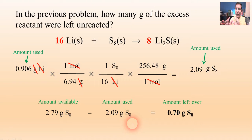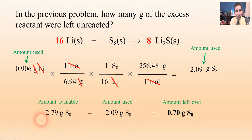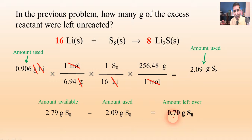This is like saying if we have a bag of 10 apples and you eat seven of them, how many are left over? You subtract 10 minus 7 and have three apples left. It's the same thing here: we had 2.79 grams available, we used up 2.09 grams in the reaction, so we subtract to find out how much is left over.